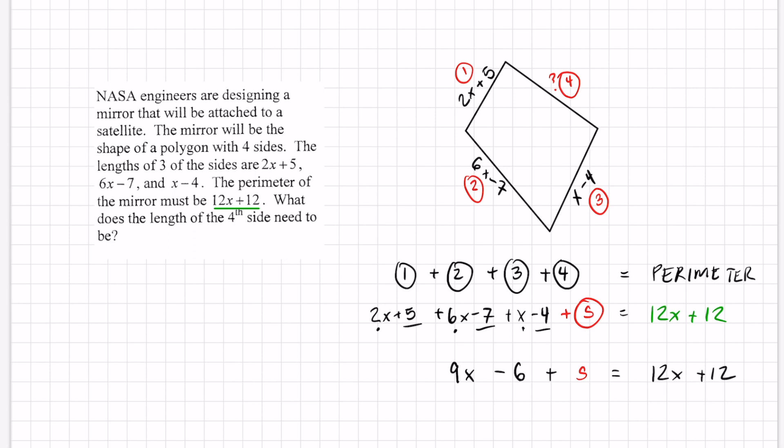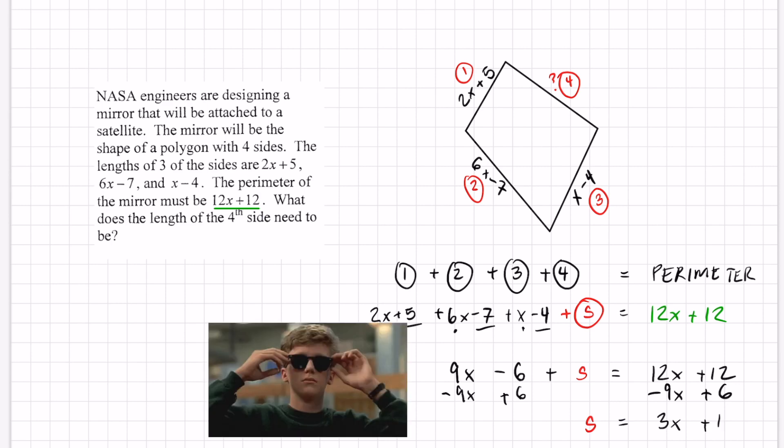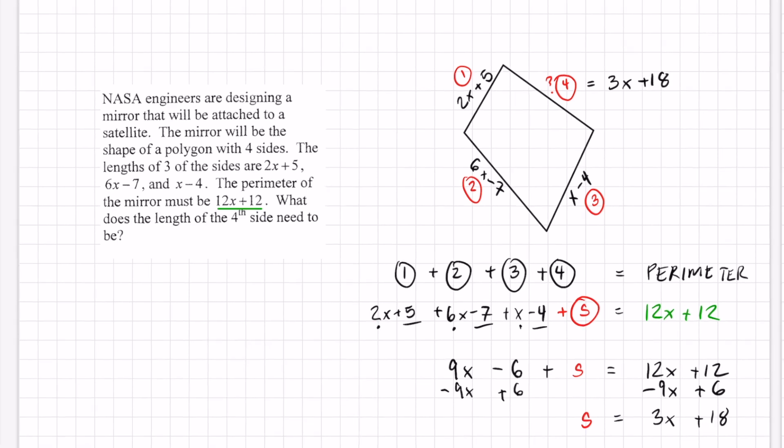Get s by itself, do two things at the same time. And I think you know where this is going now. Pretty similar problems. s equals 3x + 18. That is the length of the fourth side.